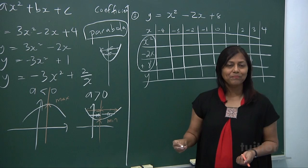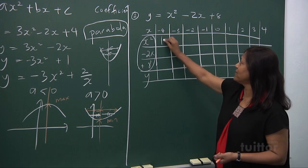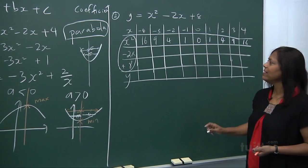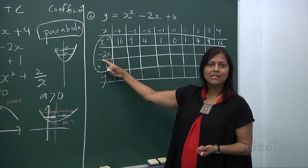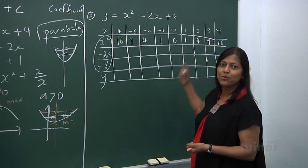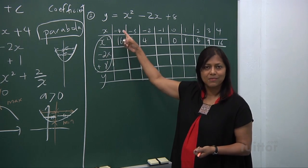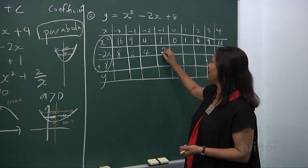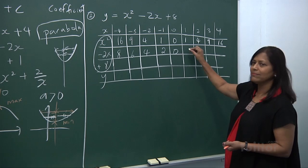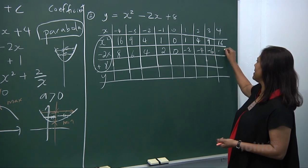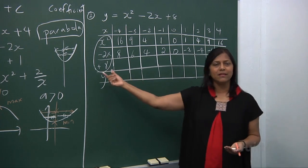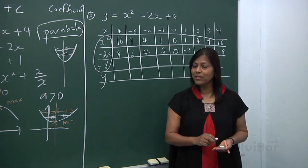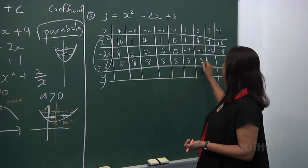Working out the rows: x squared gives 16, 9, 4, 1, 0, 1, 4, 9, 16. For minus 2 times x: minus 2 times minus 4 gives plus 8, and continuing: 6, 4, 2, 0, minus 2, minus 4, minus 6, minus 8. As for the constant, for every value of x the constant remains 8 — that's the very fact it's called a constant — so you have 8, 8, 8, 8, 8, 8, 8, 8, 8.